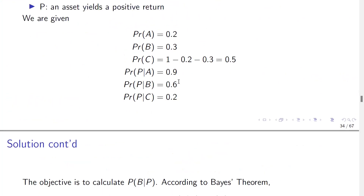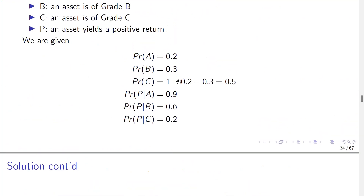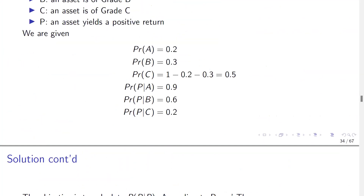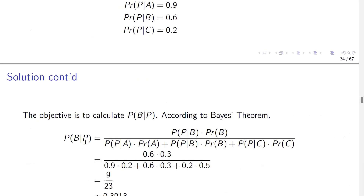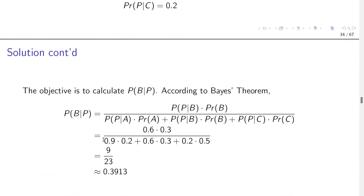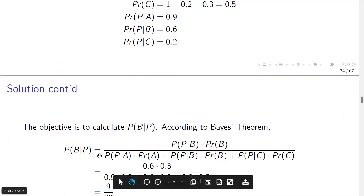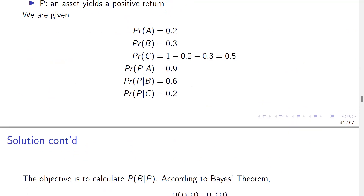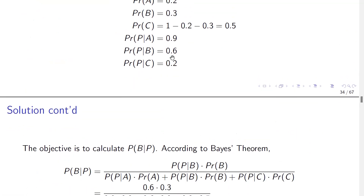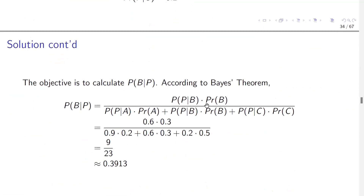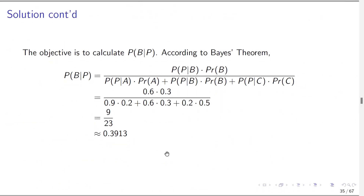Given all these values, to find P(B|P) you cannot simply use the basic conditional probability formula because you don't have P(P) and you don't have P(B∩P) directly. This is where Bayes' theorem becomes useful. Using Bayes' theorem with three assets: P(B|P) = [P(P|B)·P(B)] / [P(P|A)·P(A) + P(P|B)·P(B) + P(P|C)·P(C)]. All values are provided: P(P|B) = 0.6, P(B) = 0.3, and so on — you just substitute the figures and compute the final answer.